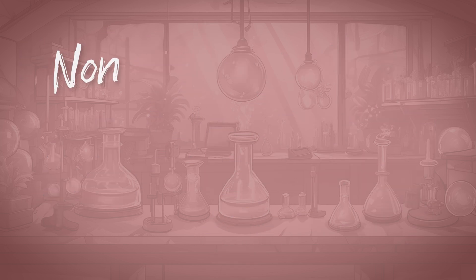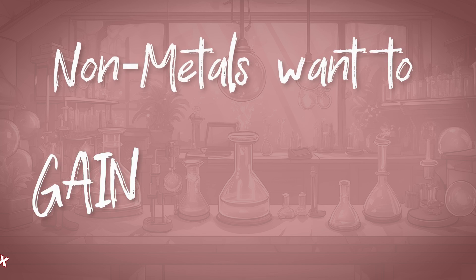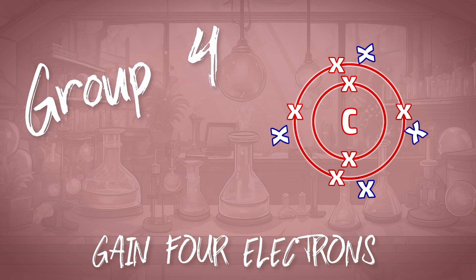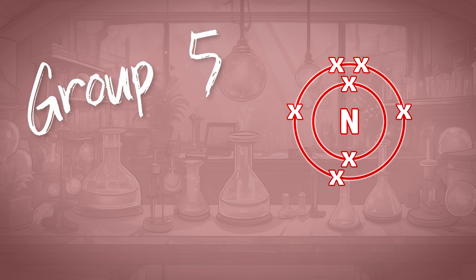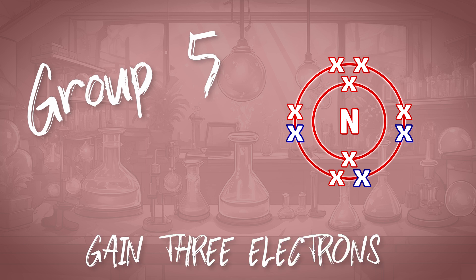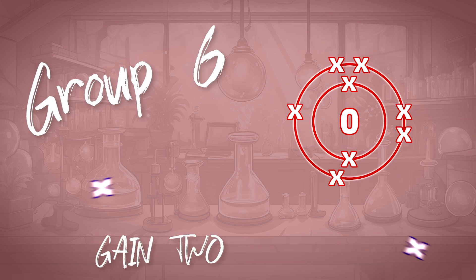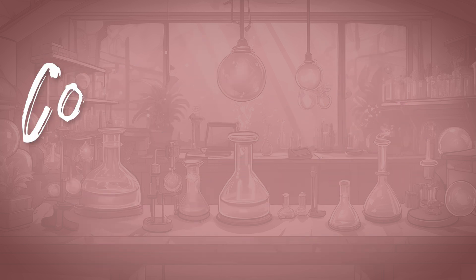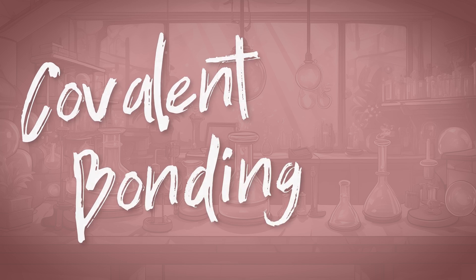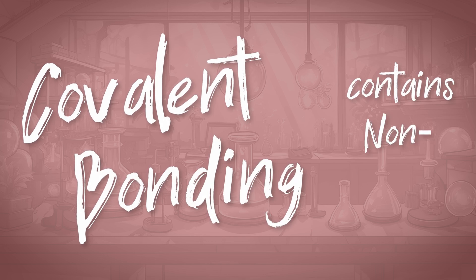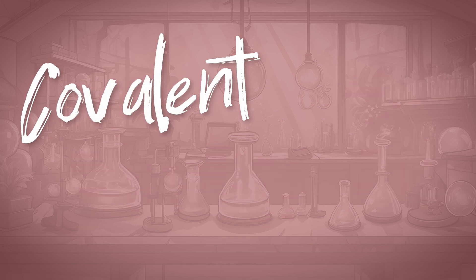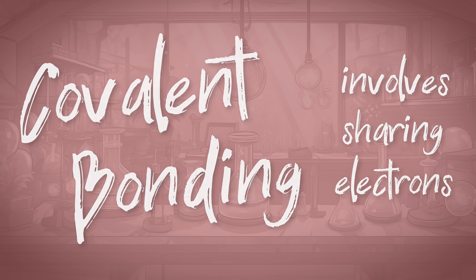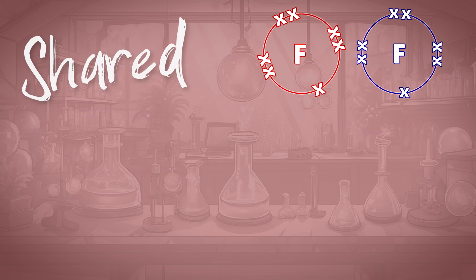Non-metals want to gain electrons to fill their outer shell. Group 4 gains four electrons, Group 5 gains three electrons, Group 6 gains two electrons. Covalent bonding contains non-metals and involves sharing electrons — shared pairs of electrons.